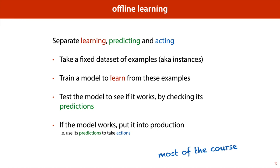For the bulk of this course, what we're going to be looking at is offline learning, which is a much simplified view of learning that still maintains the most important and interesting parts of the learning task. The main idea behind offline learning is that we separate learning, predicting, and acting. We start with a fixed dataset of examples — these are called instances. We feed all of them to a learning algorithm, which produces a model. At that point the learning is done, we have the model and we can discard the data. Then we test the model to see if it works by checking its predictions, and if it works, we put it into production — for instance, built into a phone to recognize faces or into a mail sorting system to help us recognize digits.